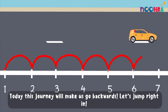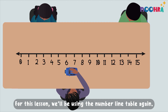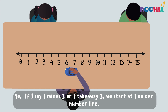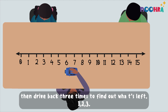Let's jump right in! For this lesson we'll be using the number line table again. So if I say seven minus three, or seven take away three, we start at seven on our number line and then we drive back three times to find out what's left.